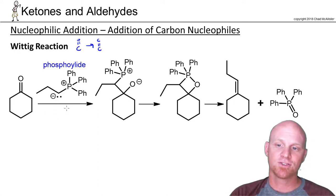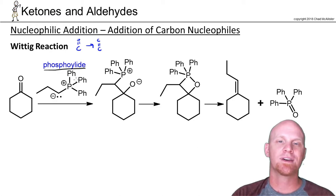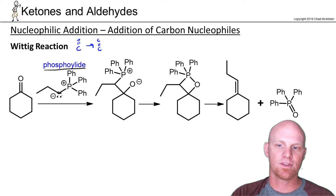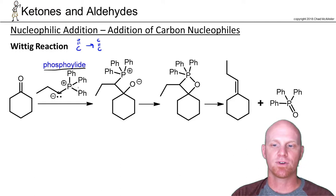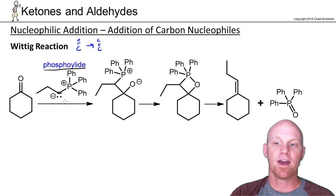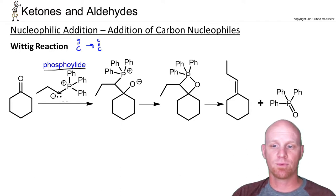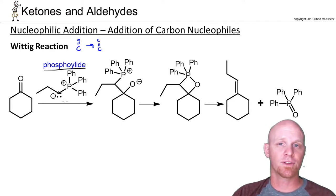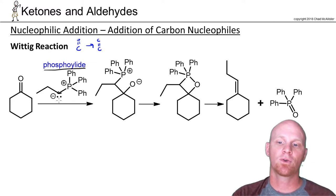In this case, your nucleophile is what we call a phospho-ylide. We've got a carbon with a negative charge, and it's stabilized by the fact that it's right next to the electron-withdrawing phosphorus. It's a very strong nucleophile. We'll show how to form it in a moment, but for now we'll concern ourselves with how to use it.